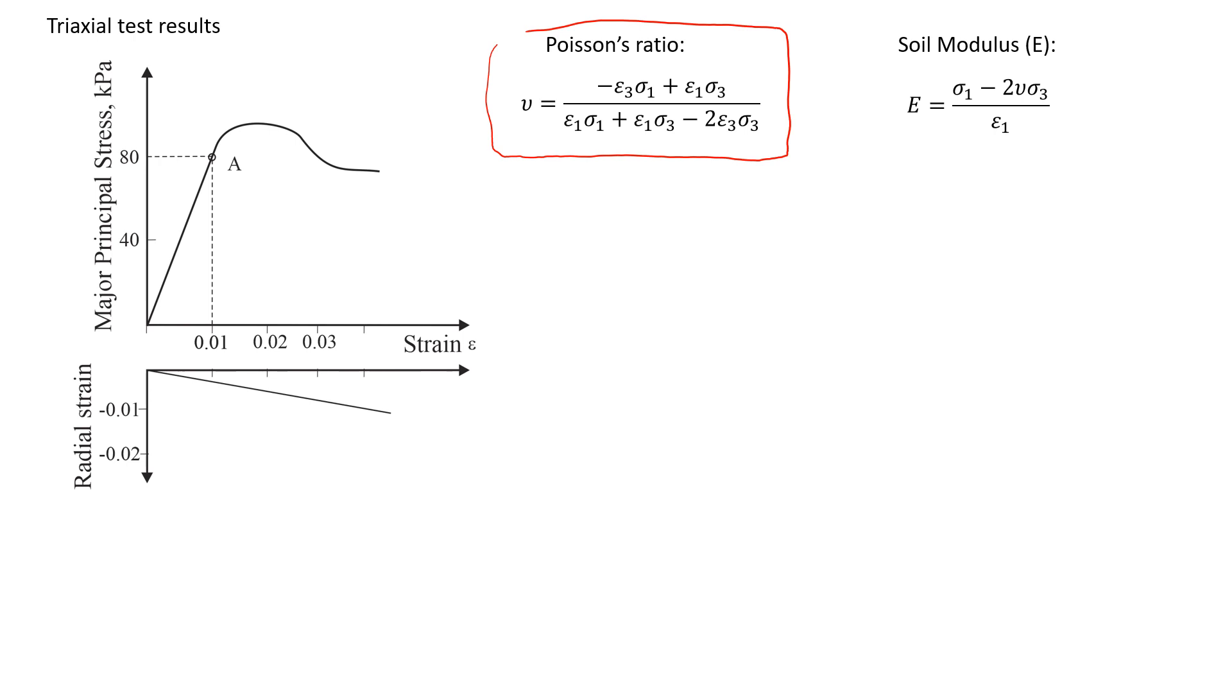This value is Poisson's ratio. To know Poisson's ratio we need to know two principal stresses. Sigma1 is major principal stress and sigma3 is minor principal stress. We also need to measure deformation. So you see this epsilon1 and epsilon3. These are the values of deformation that soil undergoes during a triaxial test.